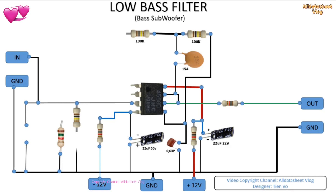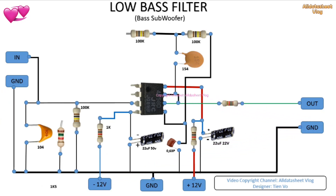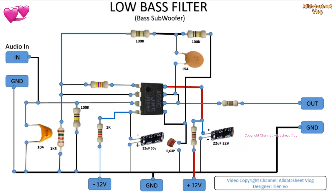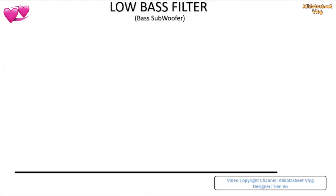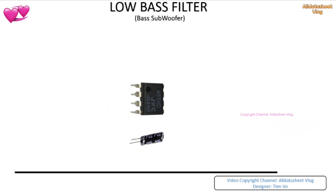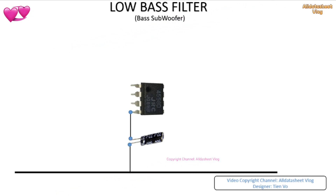The JRC4558 IC, with its outstanding specifications including low input offset voltage and input bias current, makes it an excellent choice for designing subwoofer preamplifiers. Whether you are an audio enthusiast or a professional sound engineer, understanding the functions and specifications of the JRC4558 IC, as well as the importance of the filter circuit, will certainly help you achieve optimal sound performance and a great listening experience.